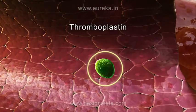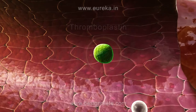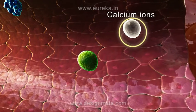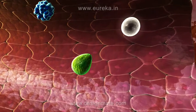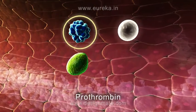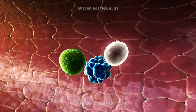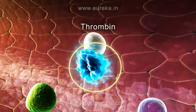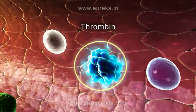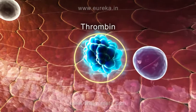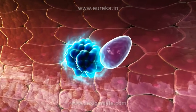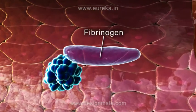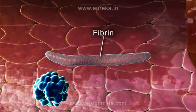In the presence of thromboplastin and calcium ions, the prothrombin present in the blood gets converted into thrombin. This thrombin now catalyzes the conversion of fibrinogen into fibrin.